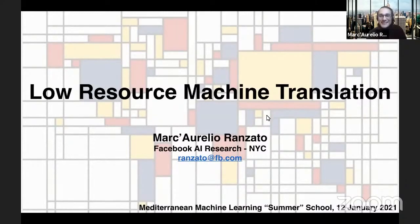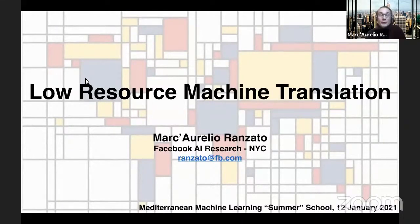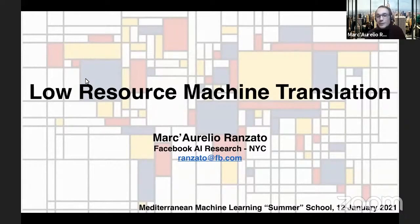Thank you, Matteo, and I would like to thank all the organizers for inviting me today. I'm very excited to be here. I'm going to talk about low resource machine translation. This is a continuation of Orhan's lectures from this morning, and it is going to be about how to apply what he described to low resource languages — languages for which you don't have a lot of supervised data to train. Since this is a machine learning school, I'm going to take the machine learning perspective and see how classical machine learning approaches can be used to build these systems.